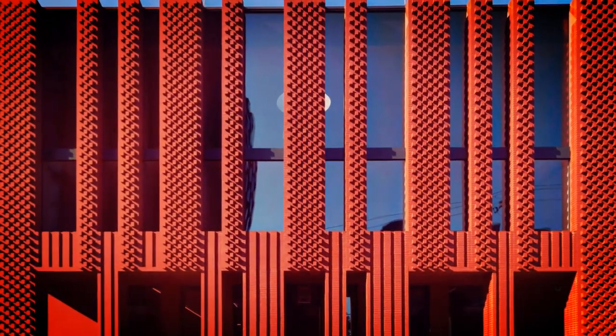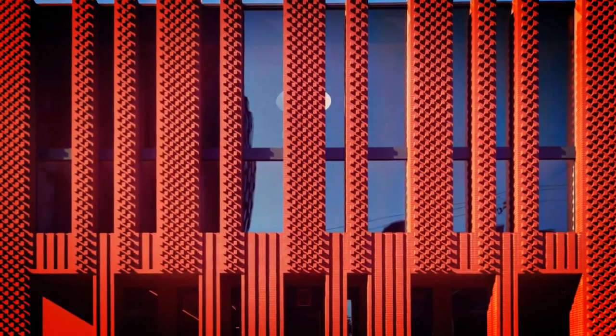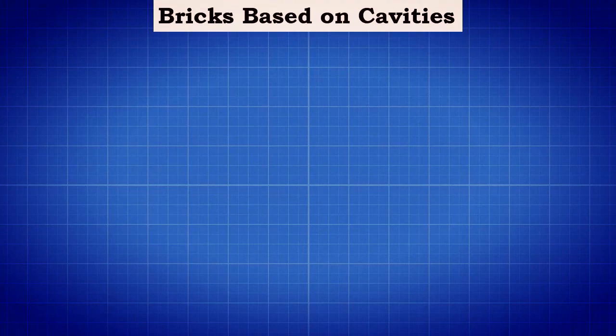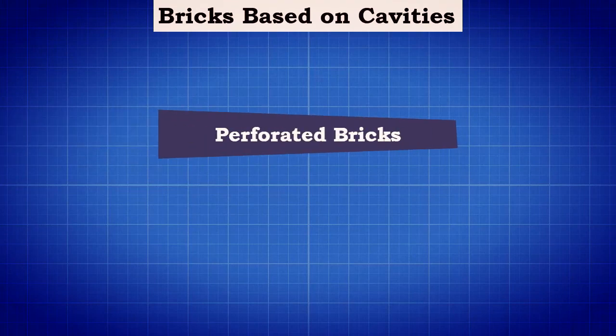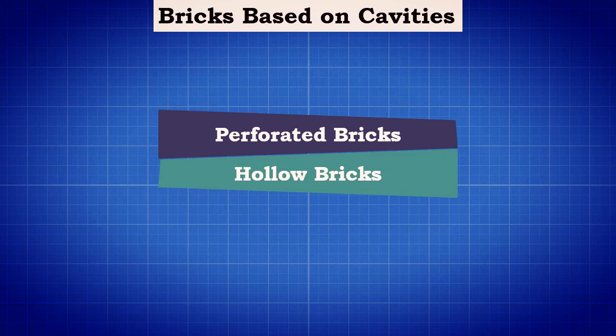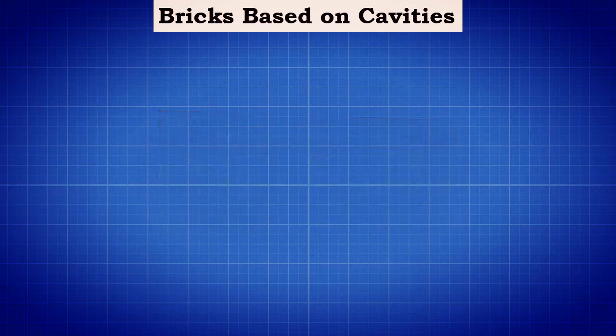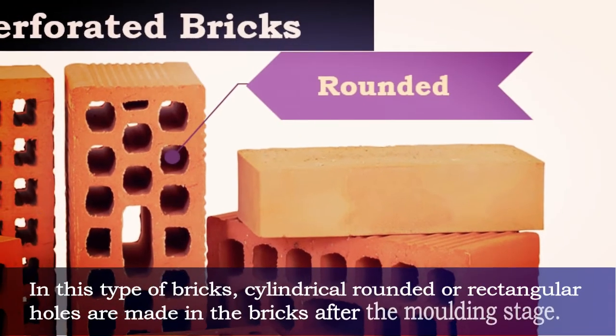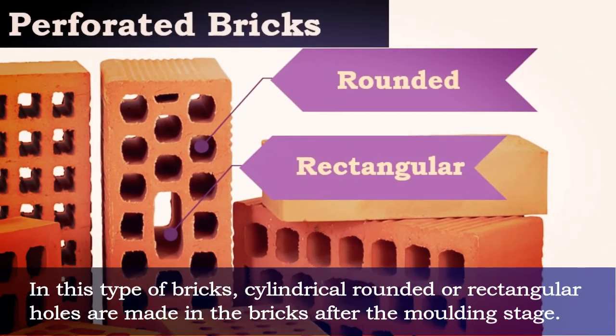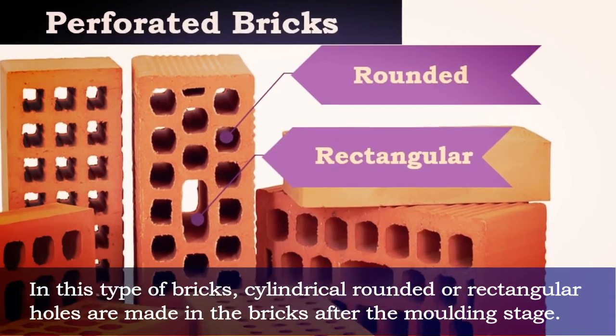There are many types under this category. In this video, let us discuss three commonly used ones: Perforated Bricks, Hollow Bricks, and Gutter Bricks. Perforated Bricks: in this type of brick, cylindrical rounded or rectangular holes are made in the bricks after the molding stage.